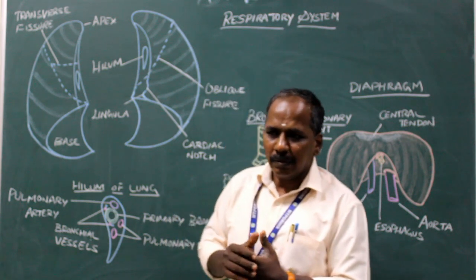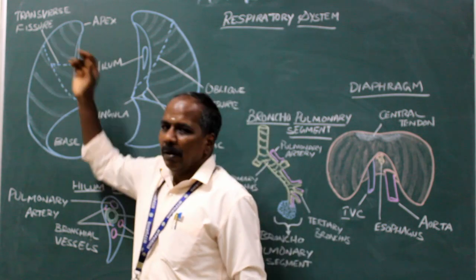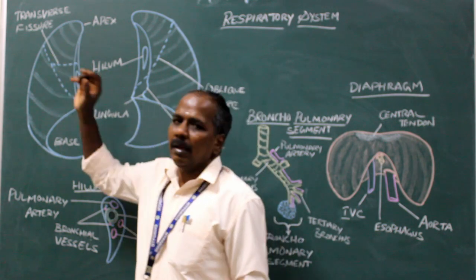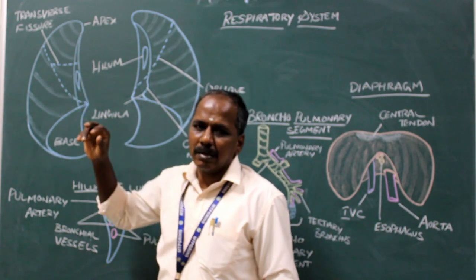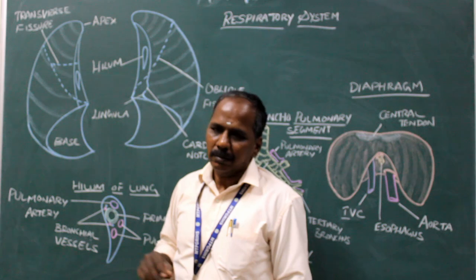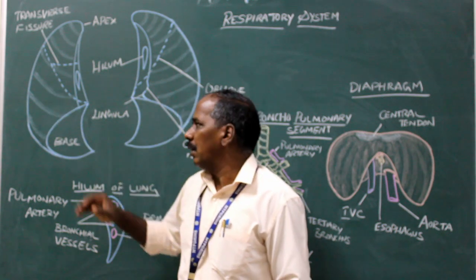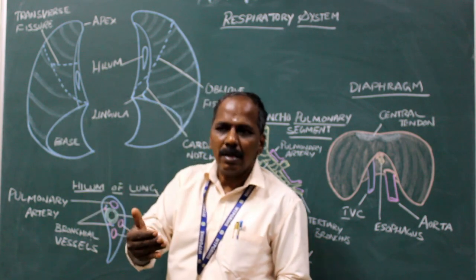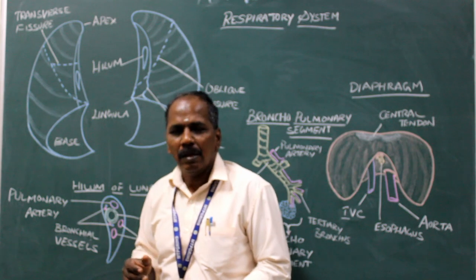The 10 bronchopulmonary segments of the right lung: The upper lobe has apical, anterior, and posterior segments. The middle lobe has medial and lateral segments. The lower (inferior) lobe has superior (apical), anterior basal, posterior basal, medial basal, and lateral basal segments.